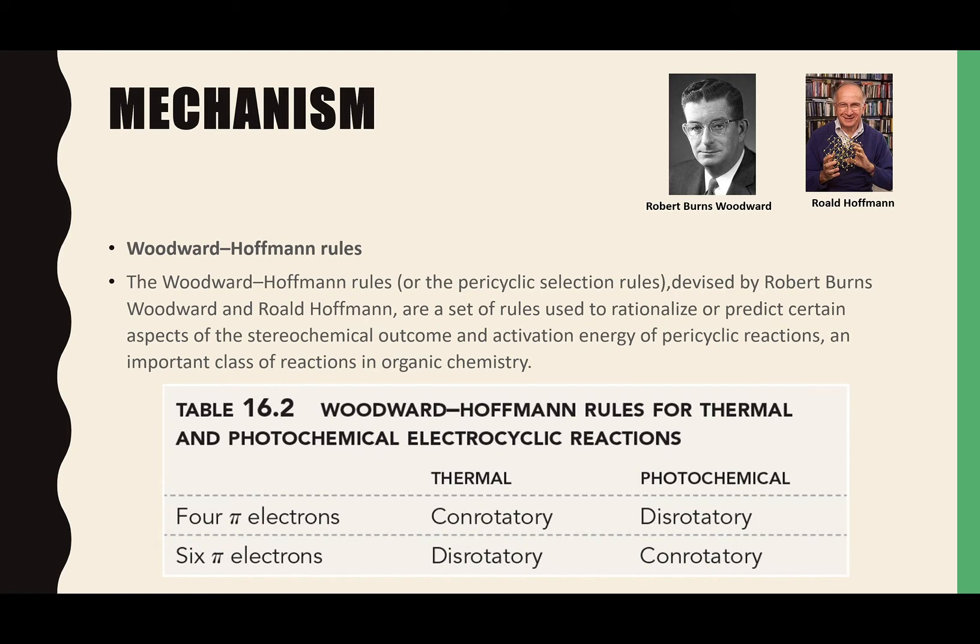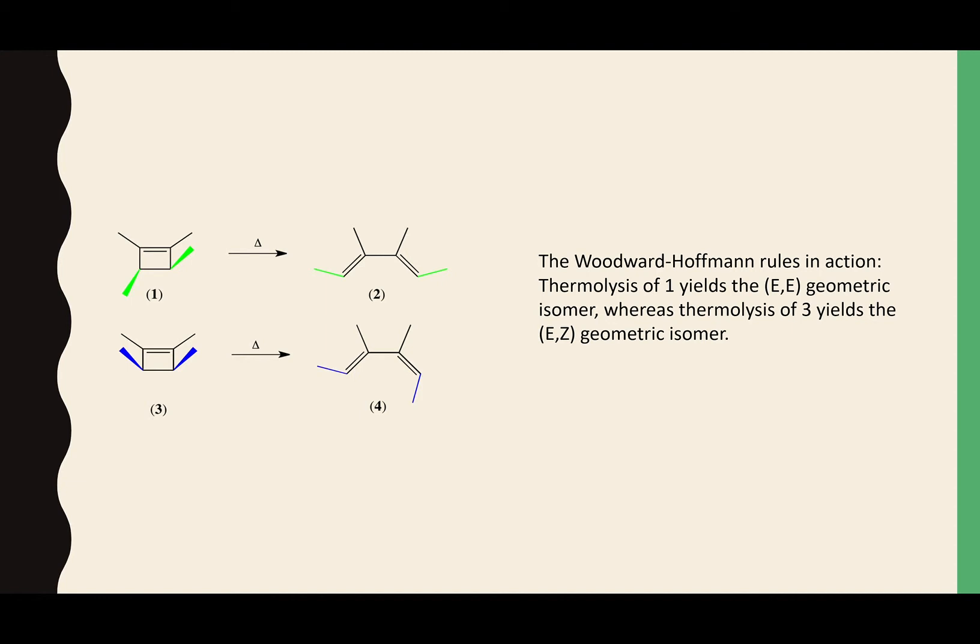The rules are mainly used to analyze electrocyclic reactions, cycloaddition reactions, and sigmatropic reactions. They can also be used to analyze group transfer reactions, cheletropic reactions, and dyotropic reactions. For example, thermolysis of compound 1 yields the EE geometric isomer, whereas thermolysis of compound 3 yields the EZ geometric isomer.